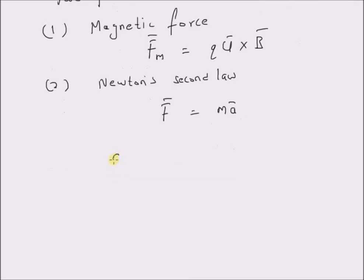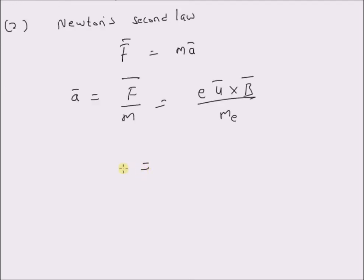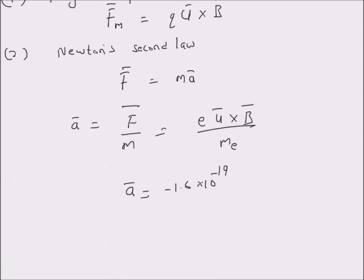The acceleration vector a-bar is given by F-bar divided by m, that is the mass of the electron. Since the force vector is equal to the magnetic force, the force is replaced by q times u-bar cross b-bar divided by the mass of the electron m-e. The acceleration vector a-bar is equal to the charge of the electron, which is minus 1.6 times 10 to the power minus 19, and u-bar is given as 4 times 10 to the power 6 multiplied by x-cap, that is the direction is positive x.